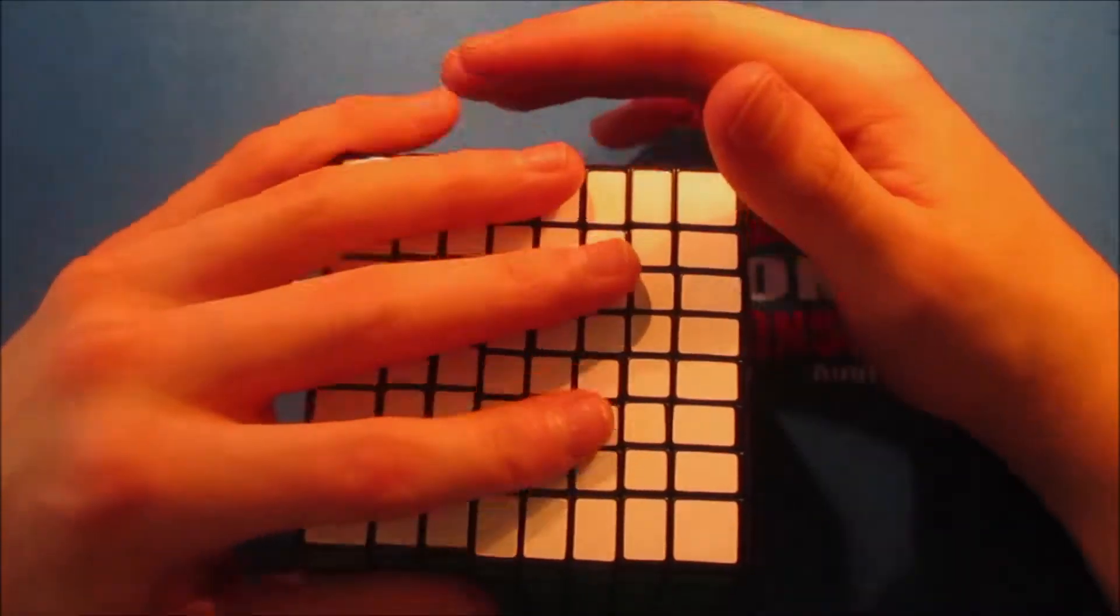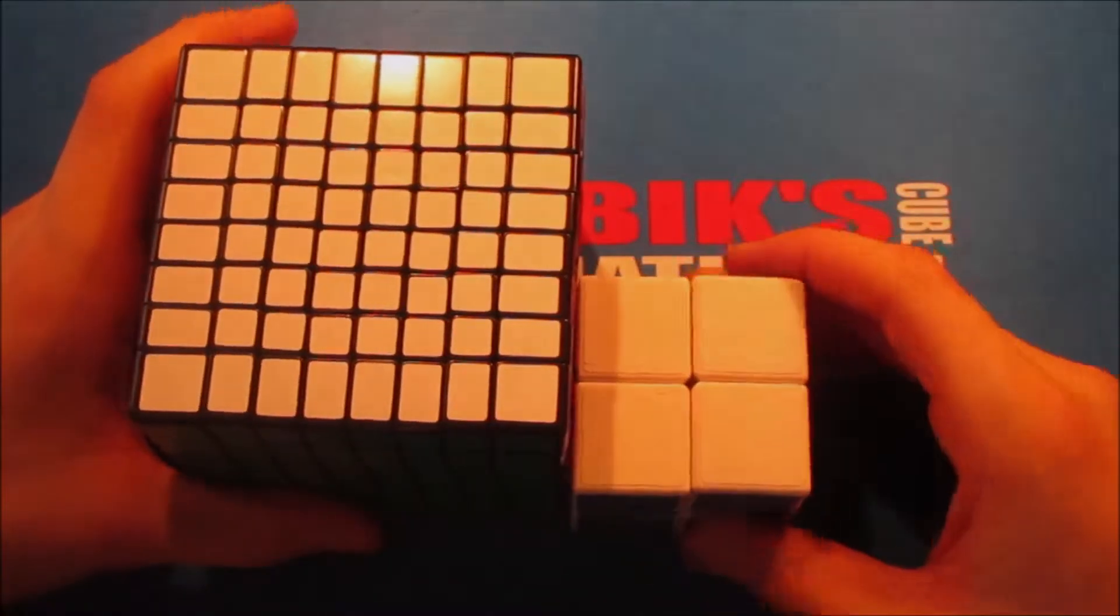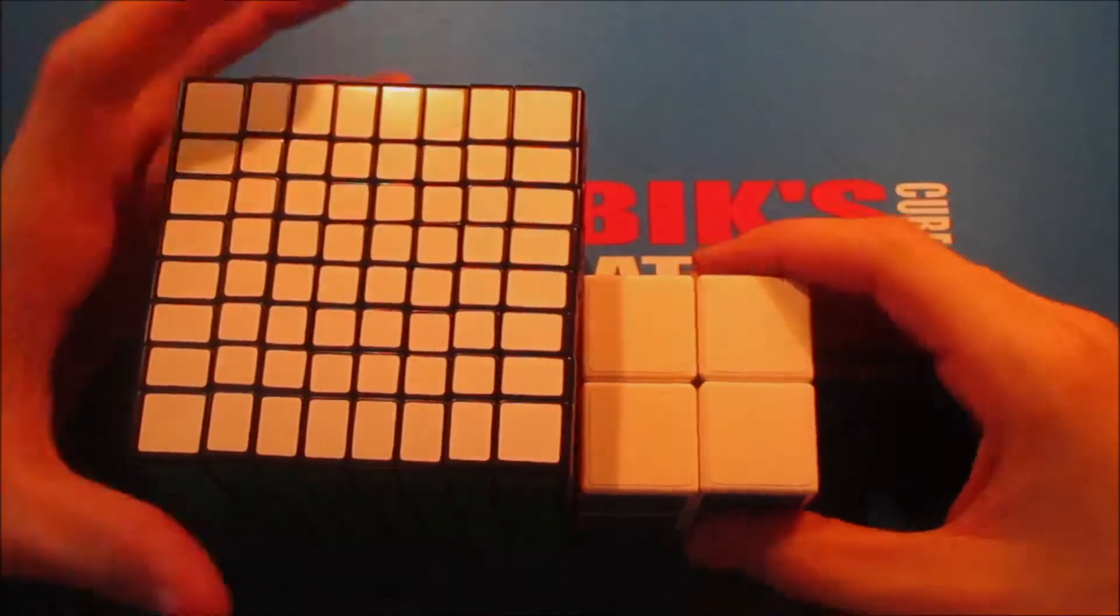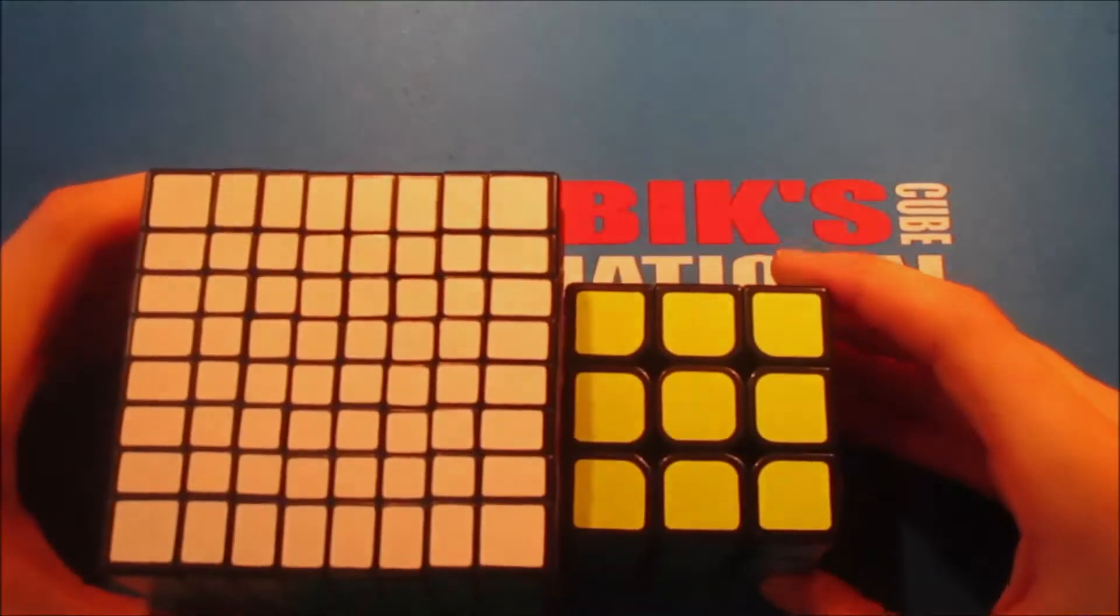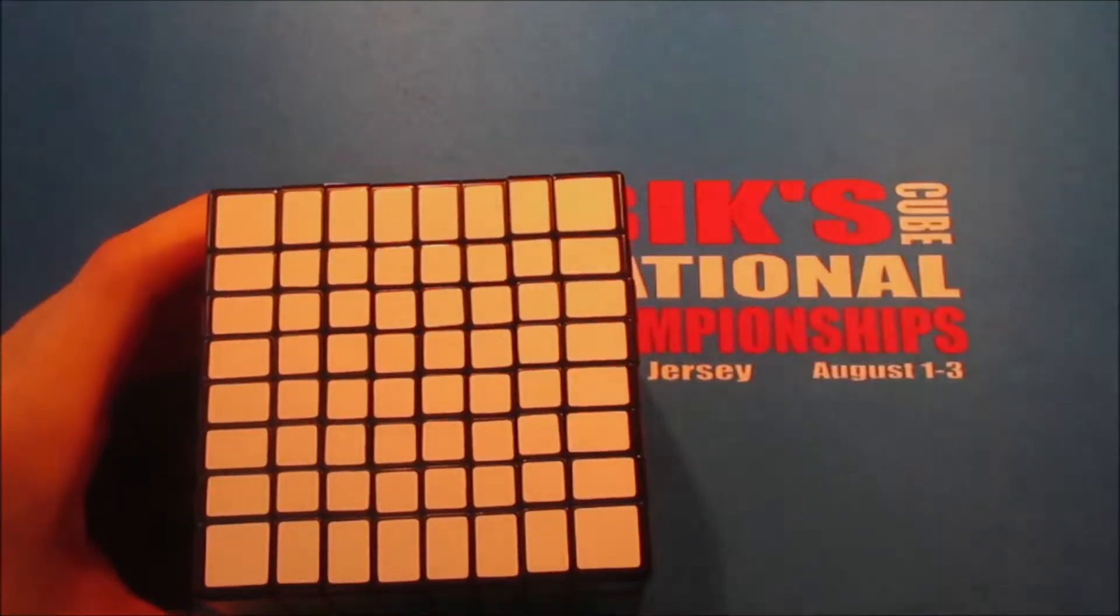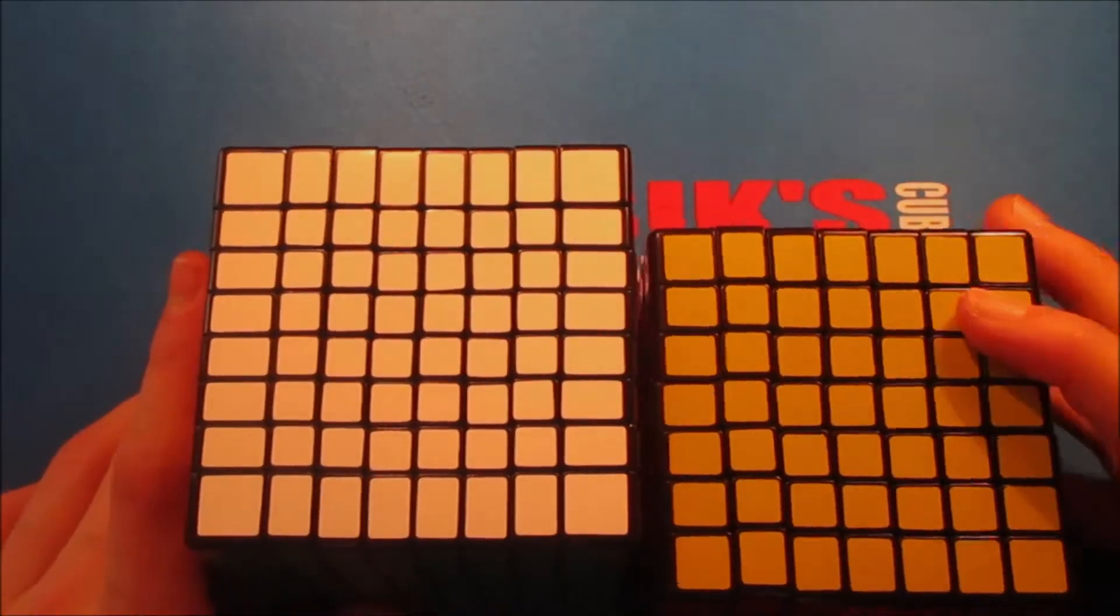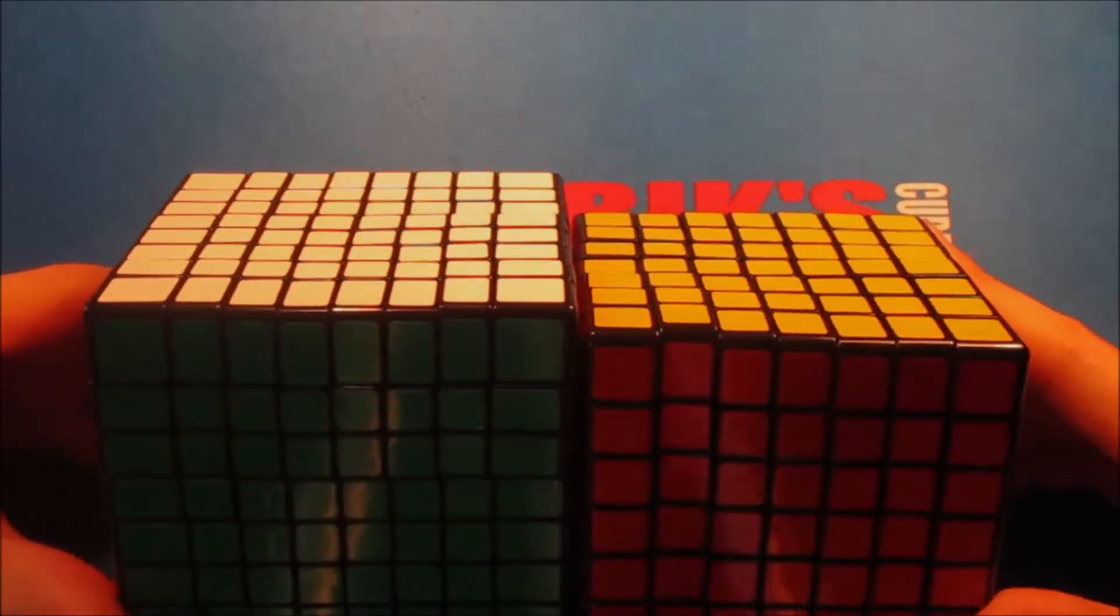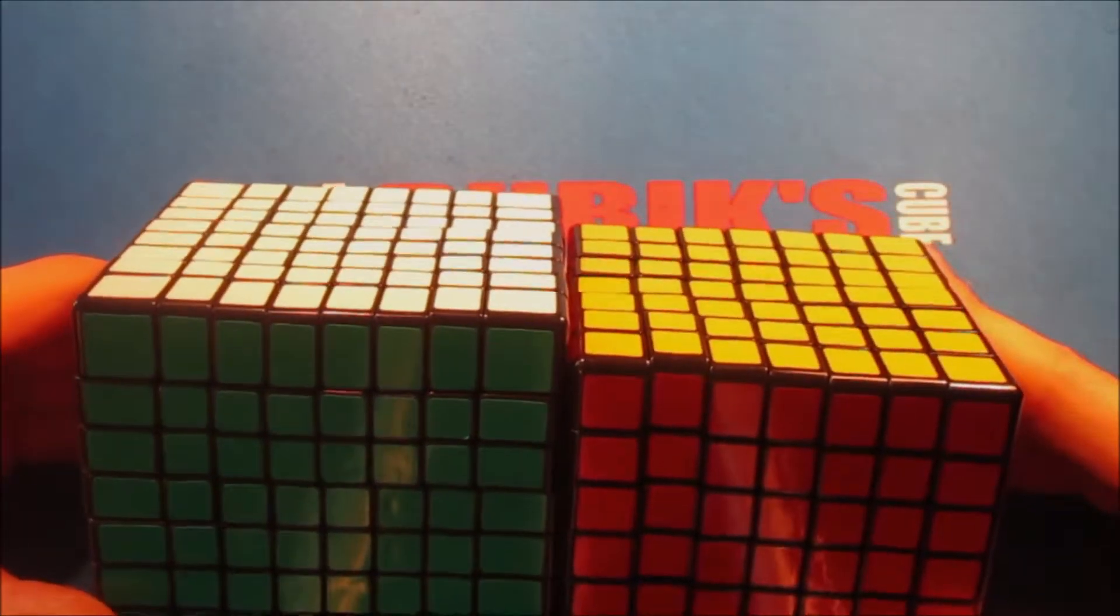Now for size comparison, here's a 2x2. So yeah this takes up about five pieces, that's a lot bigger. Here's a 3x3. Oh yeah, quite a bit bigger. Let's see the 7x7, I might be doing a review on this next.